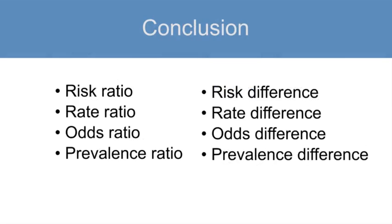In this segment, we have learned about the different types of measures of association, including risk ratio, rate ratios, odds ratios, and prevalence ratios. We've also learned about rate differences, odds differences, prevalence differences, and risk differences. This concludes our segment about the definition, formulas, and interpretation of different types of measures of association.